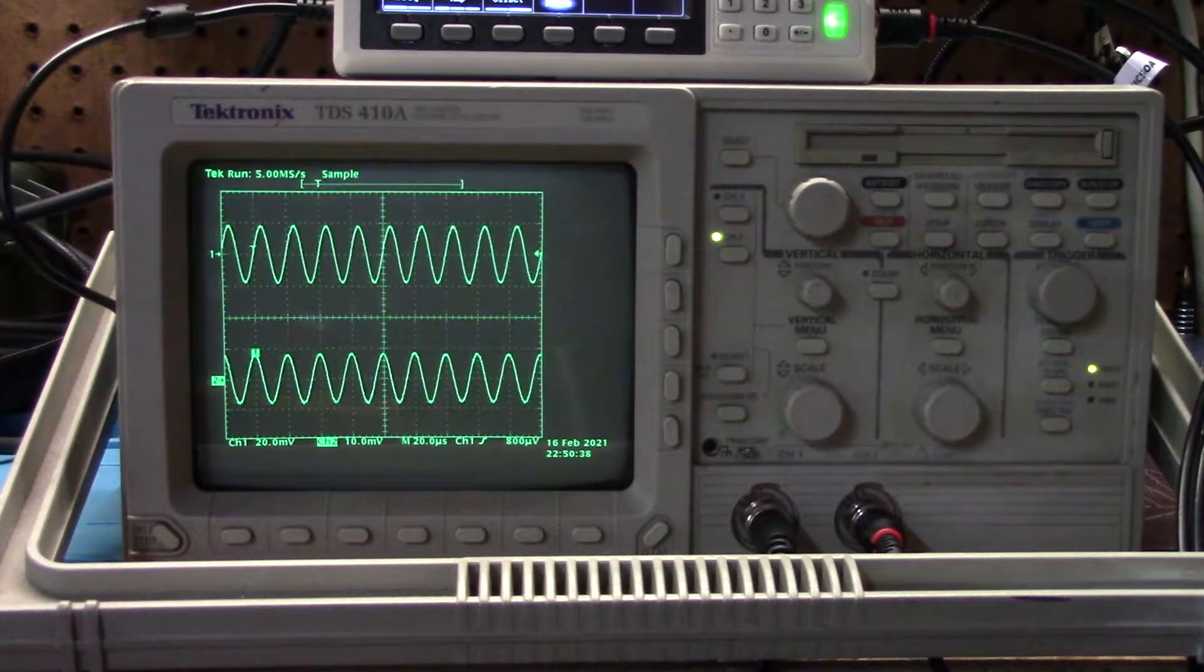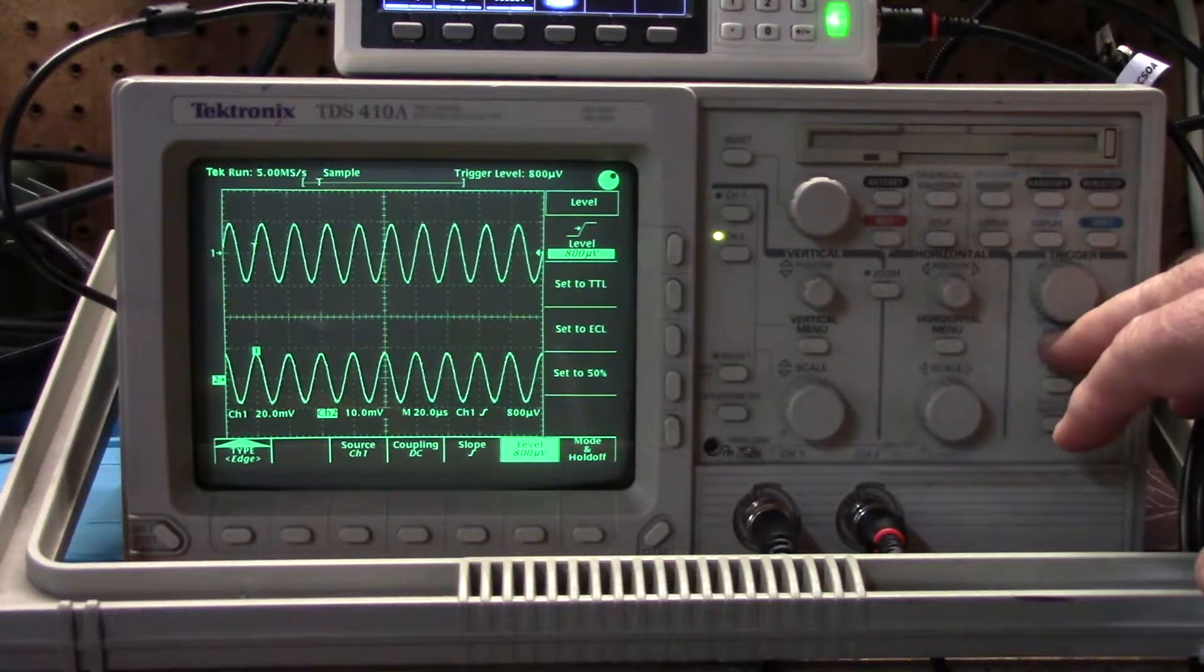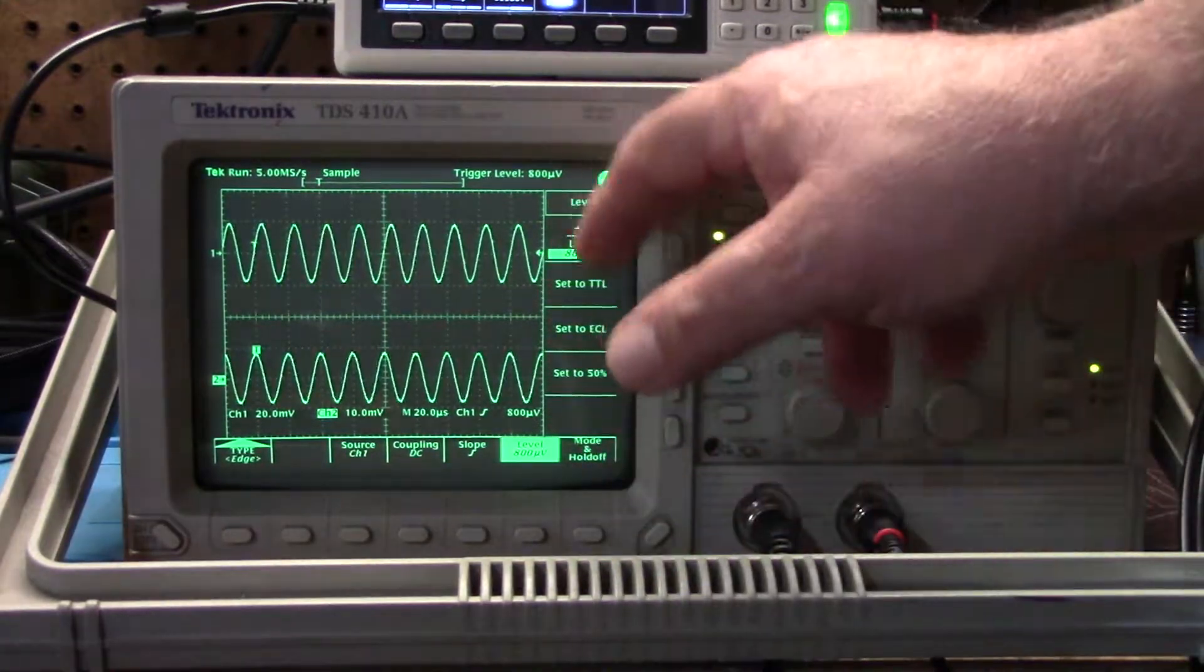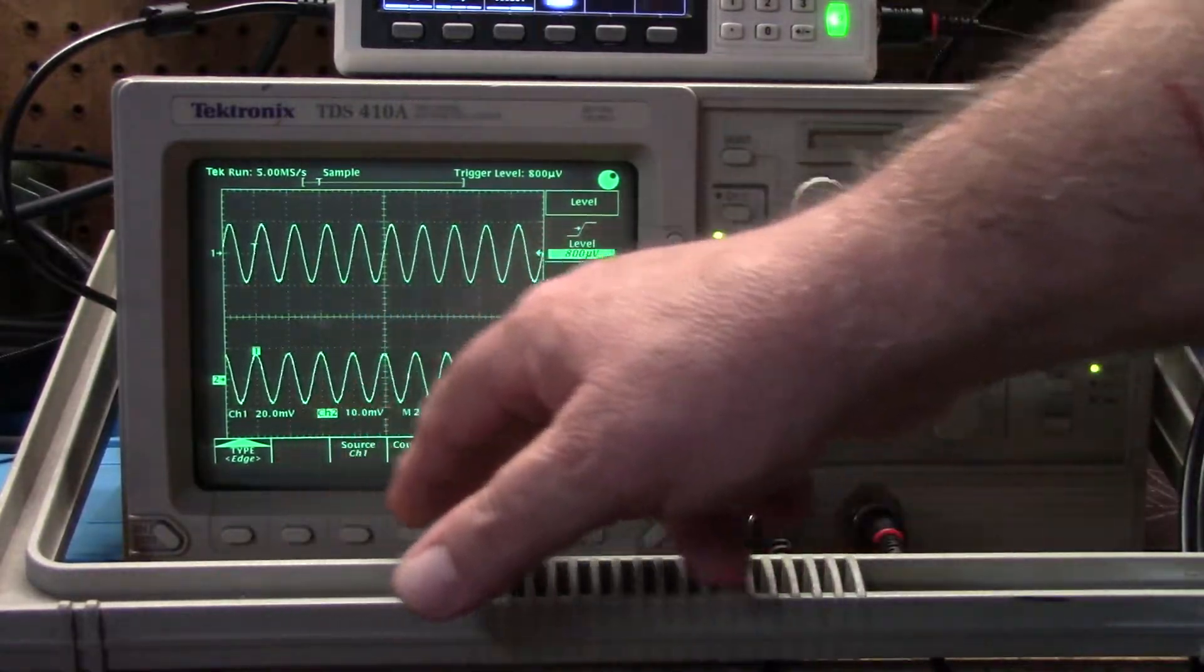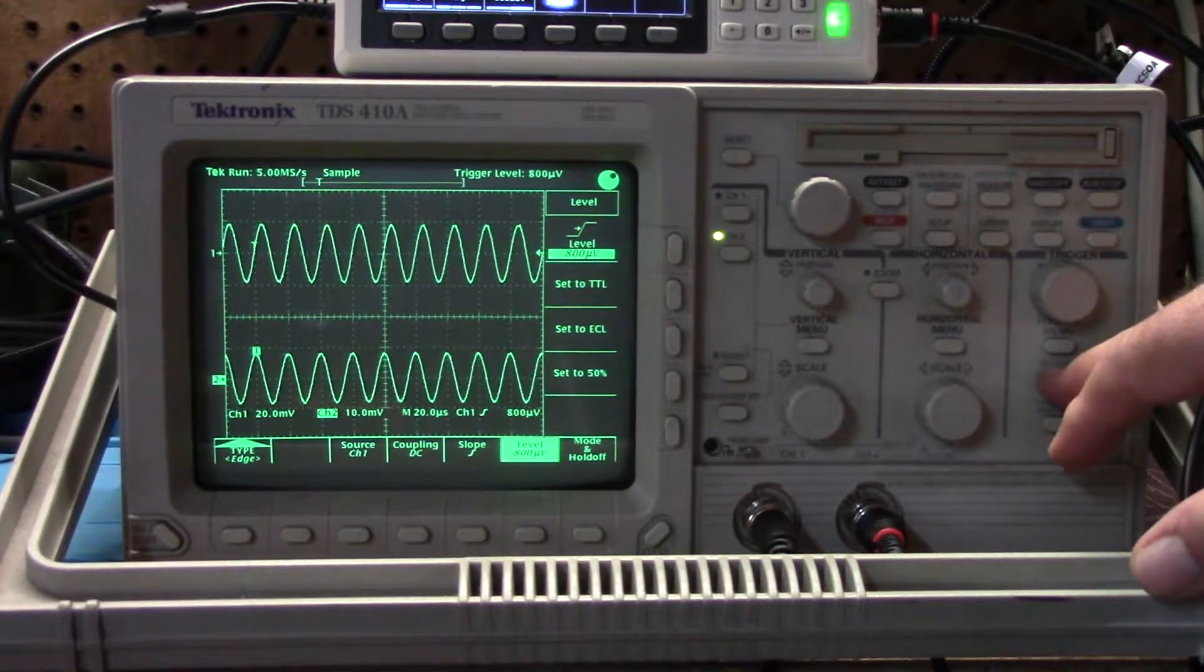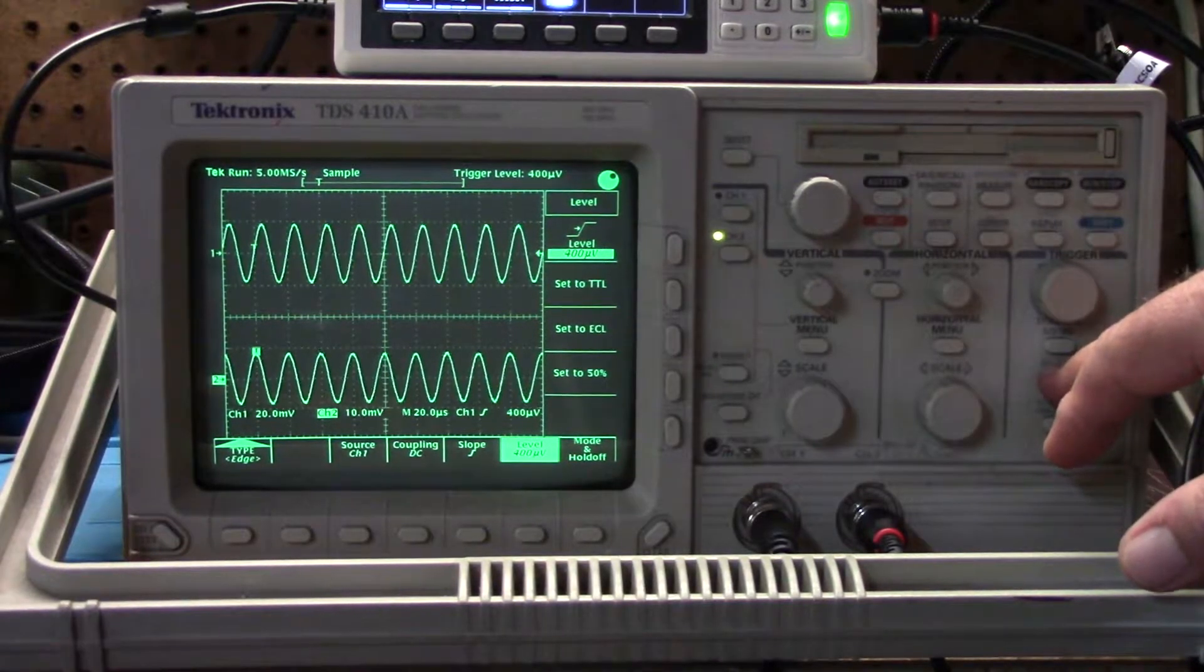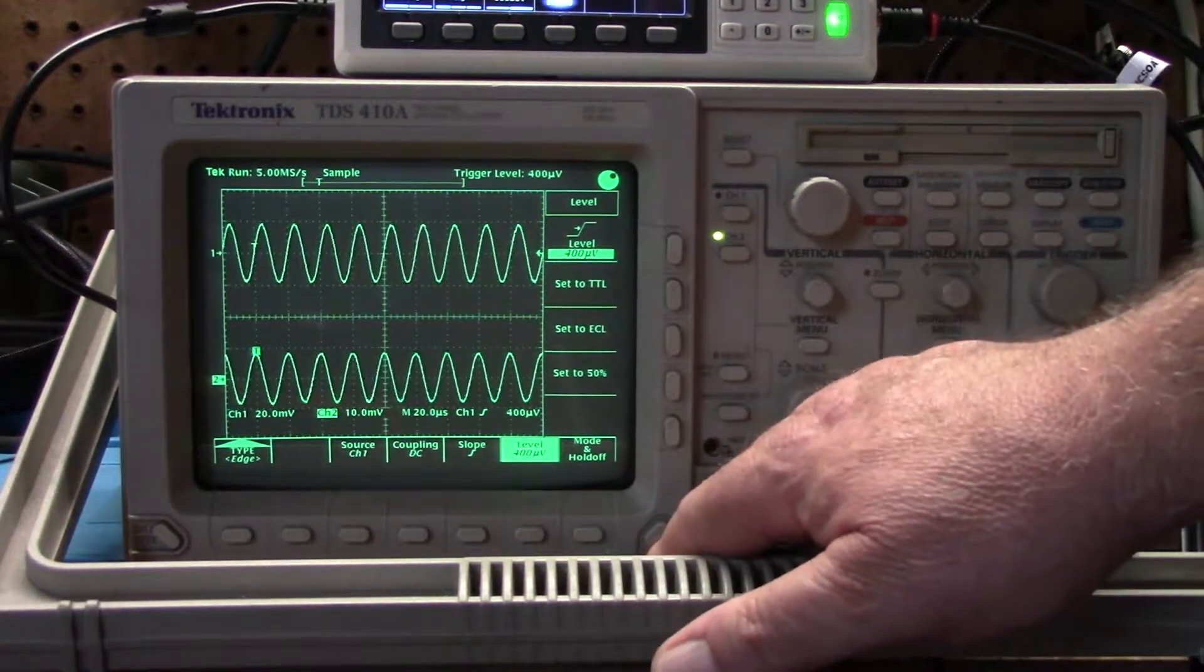This scope in particular has trigger functions, and the trigger functions use soft menus like you can see down here on the side. So I can set specific trigger functions for each probe, each channel. I can adjust my trigger levels and so on and so forth. I'm not going to fool with any of that right now.